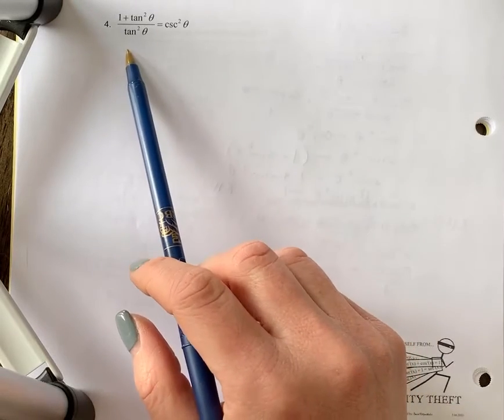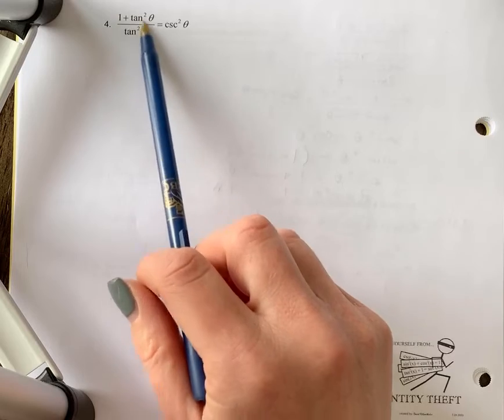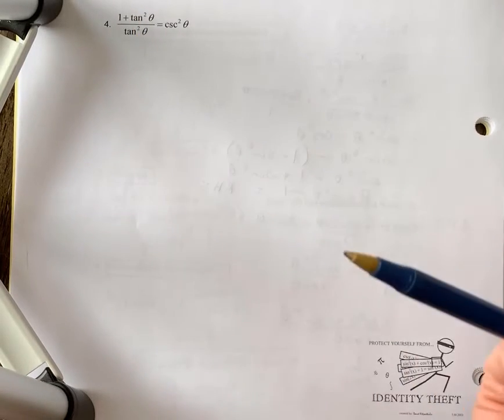Okay, number four. We're going to prove the identity. Again, I'm going to start with the left-hand side. When I see tan, I often right away start thinking of sine over cosine, so that's what I'm going to look at.